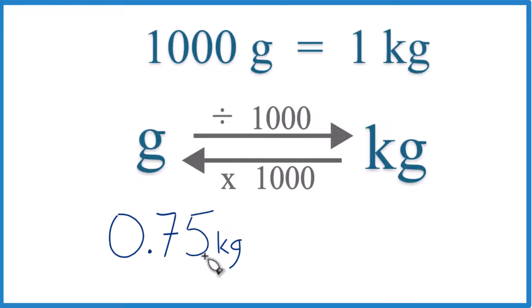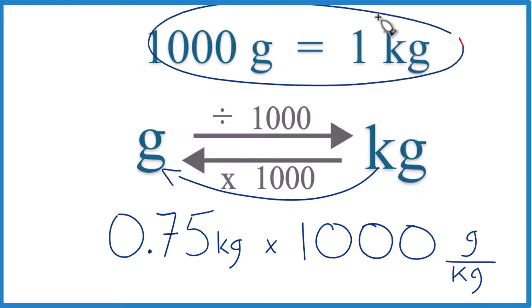In this case, we're starting out with kilograms. So we're going to multiply by 1,000, like this. And note that it's 1,000 grams per kilogram, just like in our conversion factor.